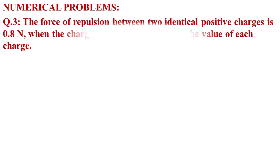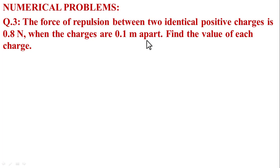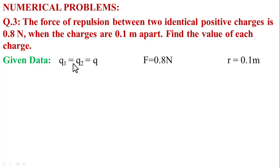Numerical problem, question number 3. Given statement: the force between two identical positive charges is 0.8 Newton when the charges are 0.1 meter apart. Find the value of each charge. Given data: Q1 = Q2 = Q (identical positive charges), force F = 0.8 Newton, radius R = 0.1 meter.